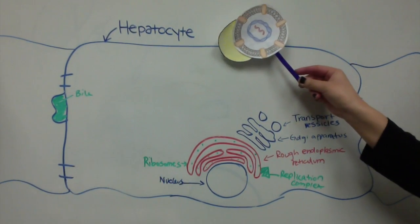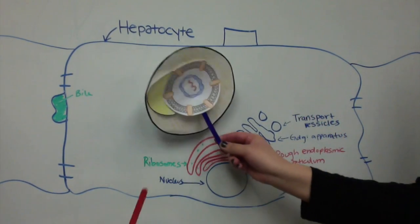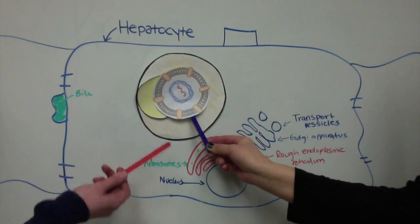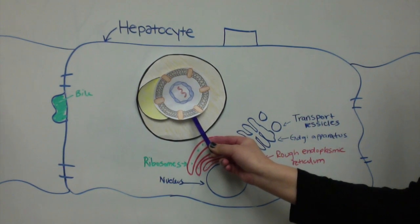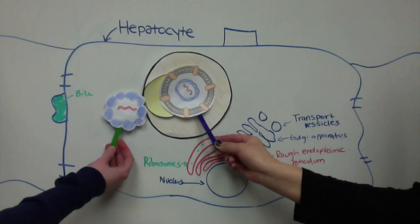HCV enters the liver cell by receptor-mediated endocytosis, which then creates an endosome, which leads to viral entry. The viral envelope will fuse to the endosome, which will result in the release of the nucleocapsid into the cytoplasm of the liver.